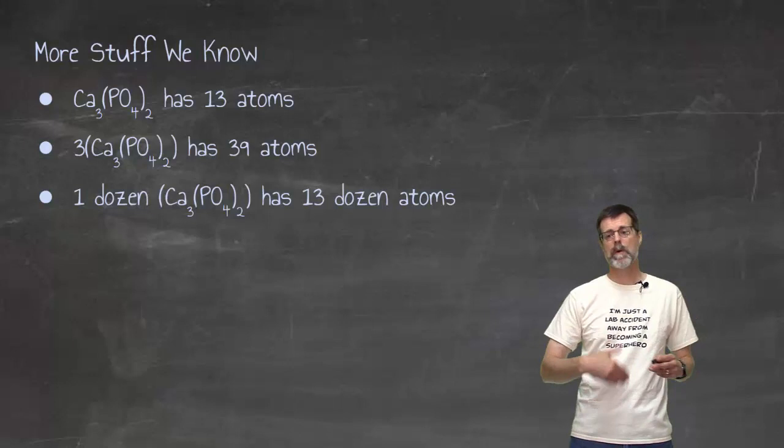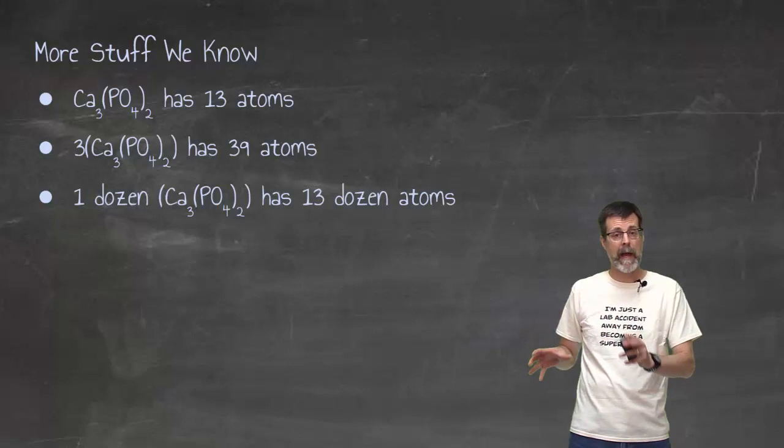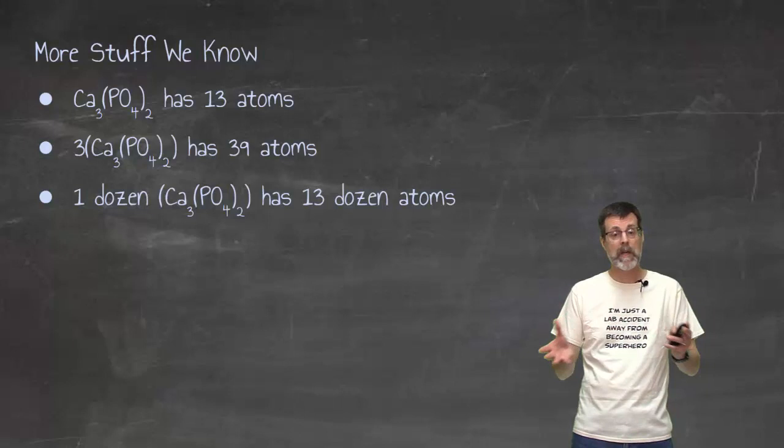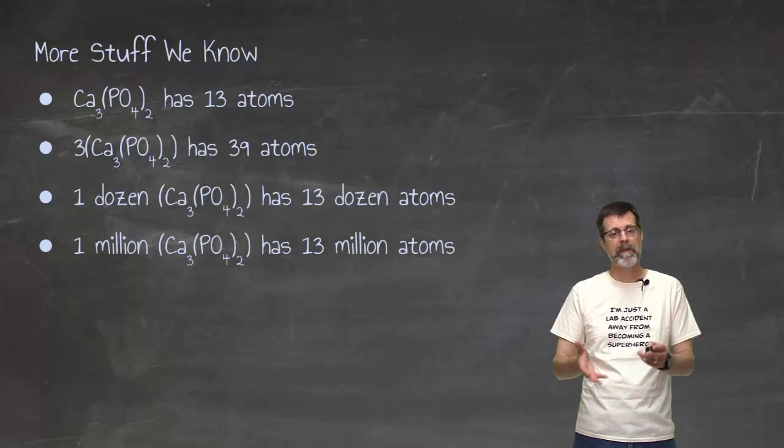If I were to keep doing that, and I would start to say, well, what if I had one dozen of those particles? I could count all the particles or all the atoms in terms of dozen, right? Yes, I could come up with whatever that number actually is, but it's more convenient for me to say 13 dozen because one had 13 atoms. So one dozen has 13 dozen.